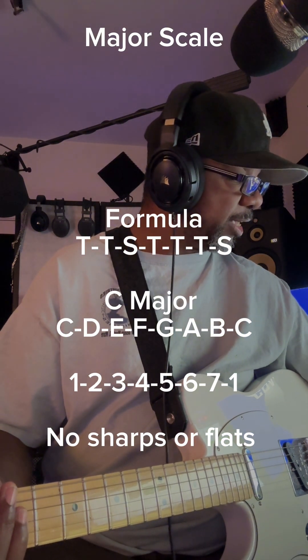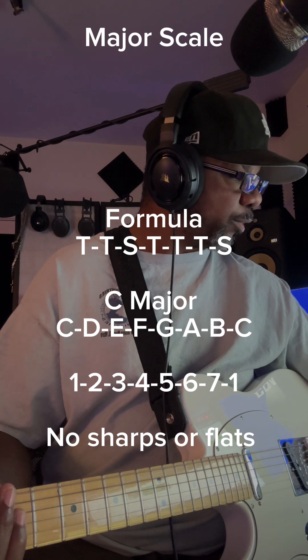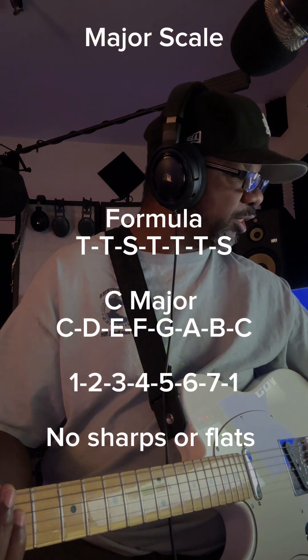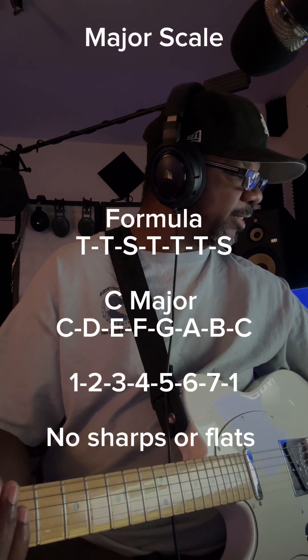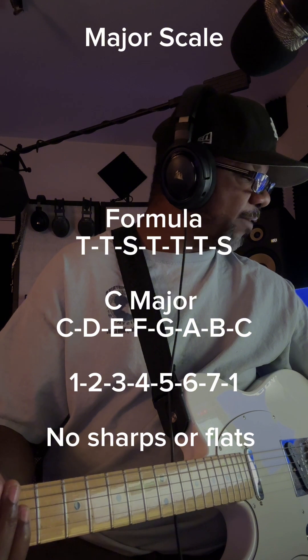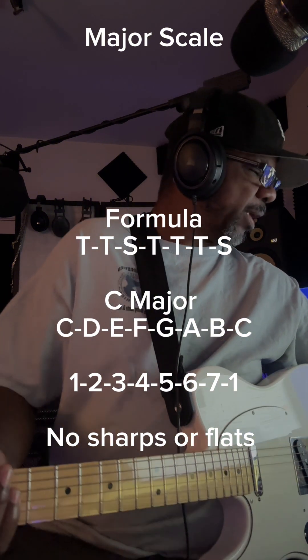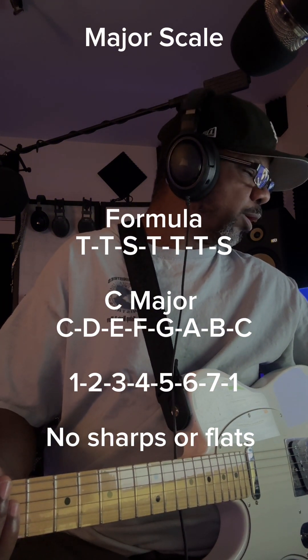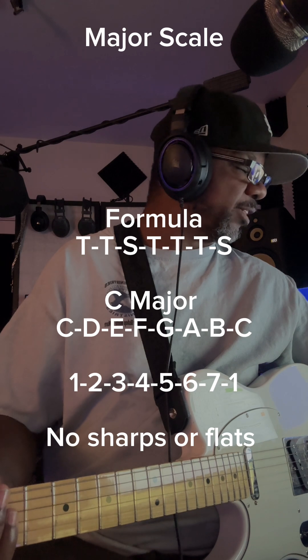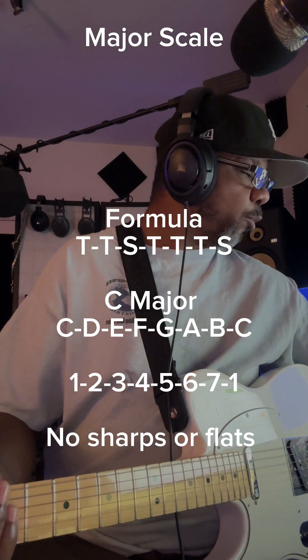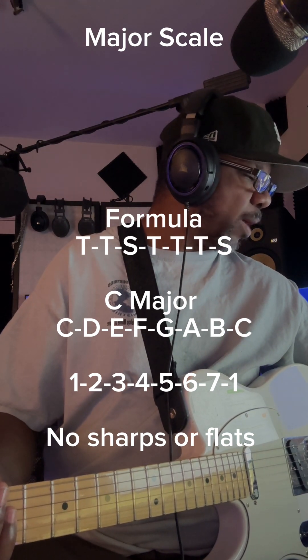If you put a numeric value to that, C is the 1, the D is the 2, the E is the 3, the F is the 4, the G is the 5, the A is the 6, and the 7 is the B. And if you look at it back as an octave, the C becomes an 8, or we give it the same value as 1.